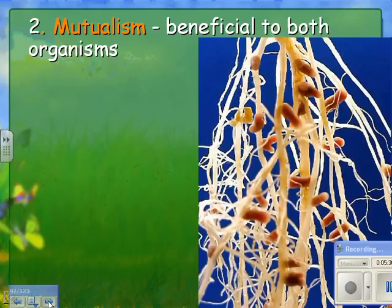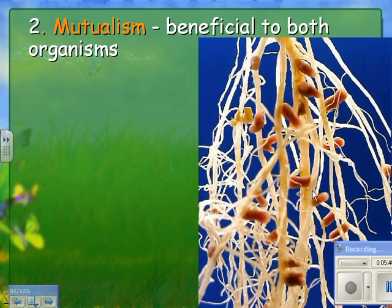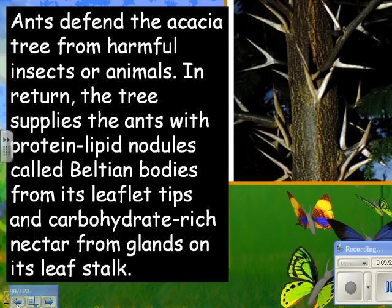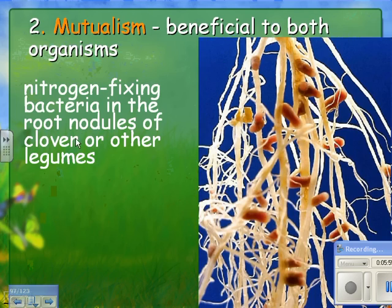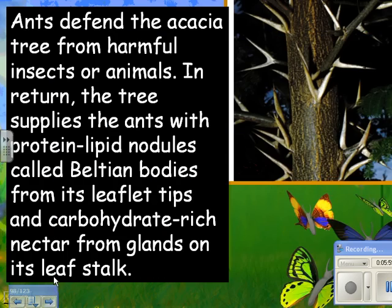The next type is mutualism, which benefits both species. These are the roots of a clover plant, and the small nodules contain bacteria that fix nitrogen. The plant benefits by getting nitrogen from the bacteria, and the bacteria benefit by getting sugar and a moist place to live from the plant.